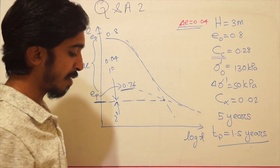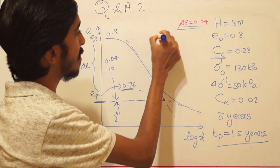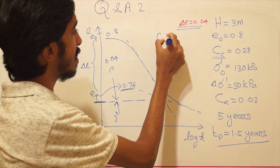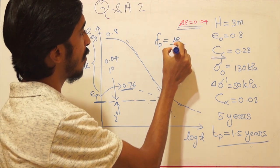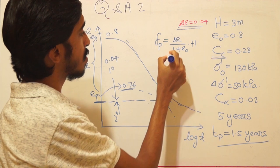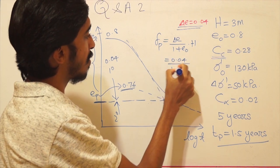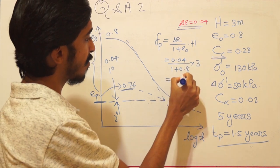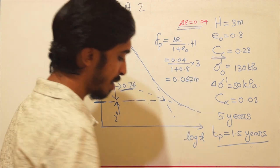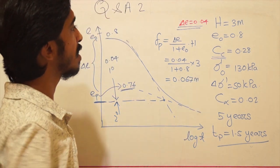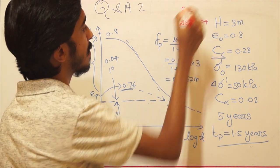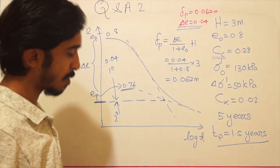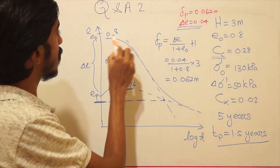To find the settlement due to primary consolidation, Δp = Δe / (1 + e0) × H. Substituting: 0.04 / (1 + 0.8) × 3 meters = 0.067 meters. So the primary consolidation settlement is 0.067 meters.